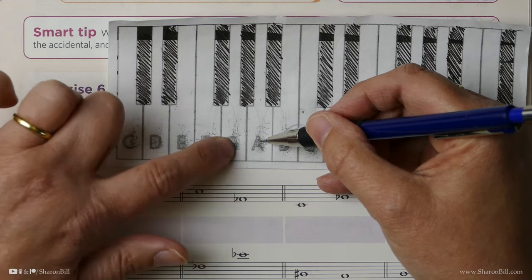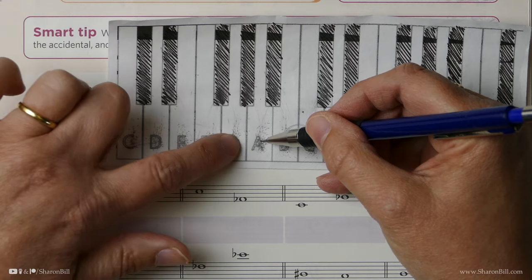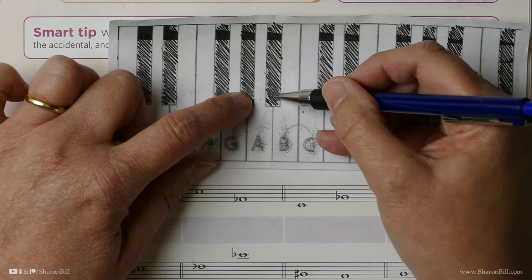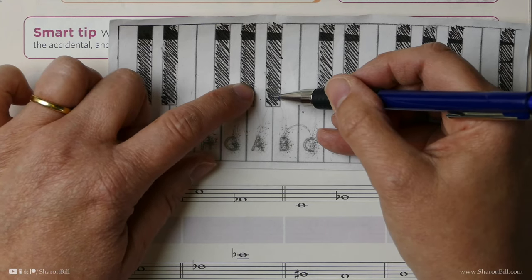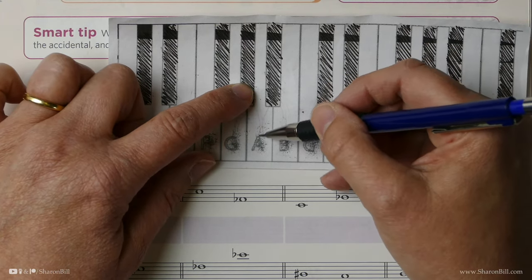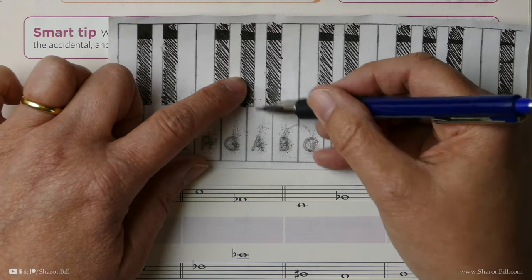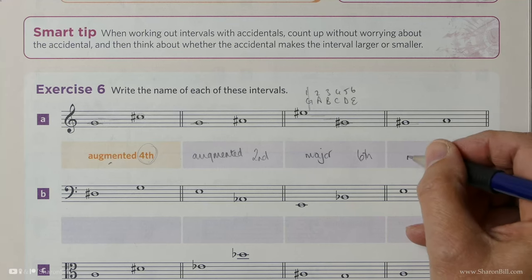We can see. We can see there, G sharp to A. We've made the major interval smaller. You could also think, well, G sharp to A sharp would be major. But we've made the A smaller. It's A natural. You could come at it either way. We've just gone a semitone, and so we know it's a minor second.